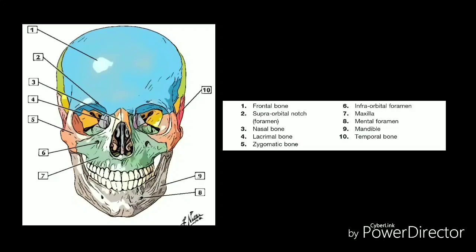The neurocranium forms the cranial cavity that surrounds and protects the brain and brain stem. The neurocranium is formed from the occipital bone, two temporal bones, two parietal bones, the sphenoid, ethmoid, and frontal bones. They are all joined together with sutures.